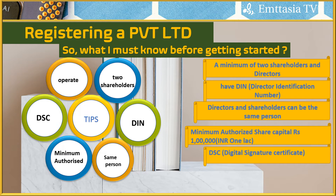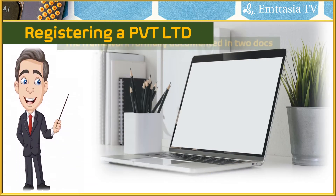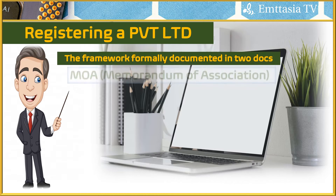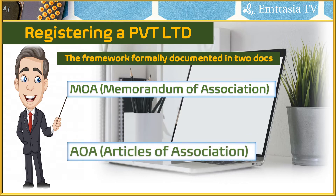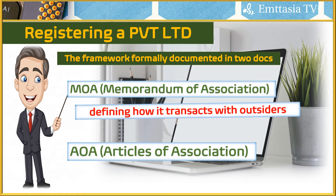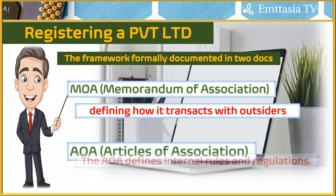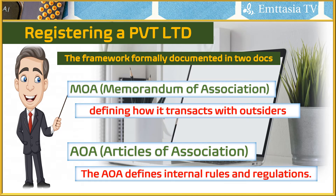Every private limited company must operate within a formal framework documented in two key documents: MOA and AOA. MOA is the Memorandum of Association, which acts as a charter defining how the company transacts with outsiders. AOA is the Articles of Association, which defines the internal rules and regulations of the company.